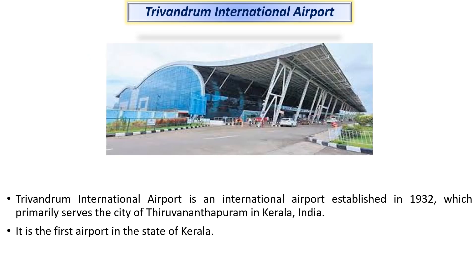Trivandrum international airport, established in 1932, primarily serves the city of Thiruvananthapuram in Kerala, India. It is the first airport in the state of Kerala.